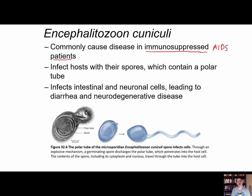For this particular microsporidium, it can infect cells of the intestine or the nervous system. In the intestine, that affects digestion and causes diarrhea, which if chronic can cause problems with hydration and absorbing nutrients. In the nervous system, it can cause the nervous system to degenerate — both outcomes are not good.